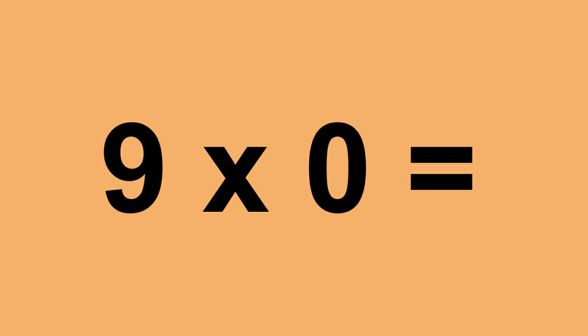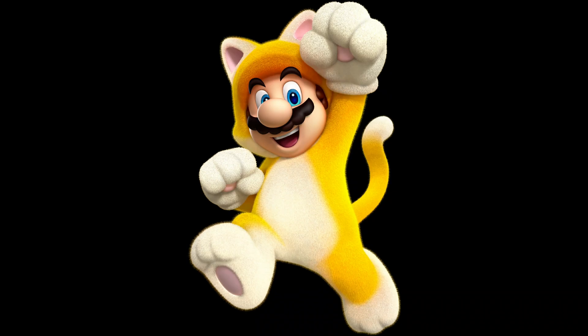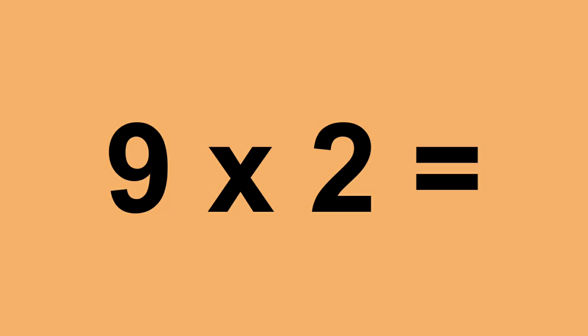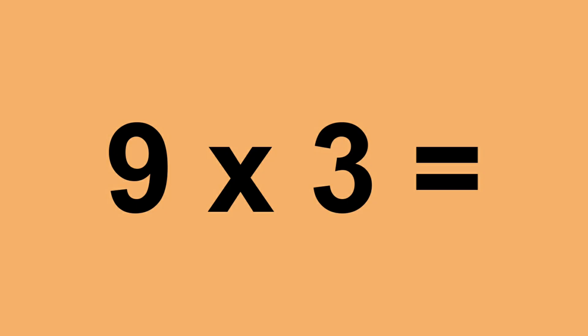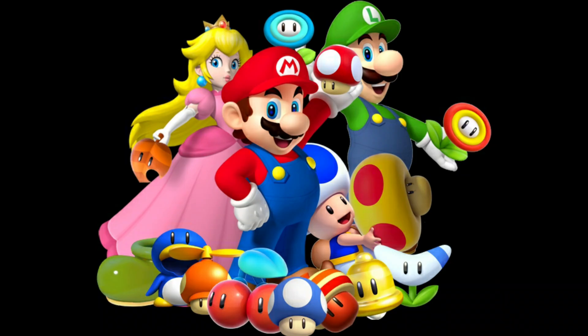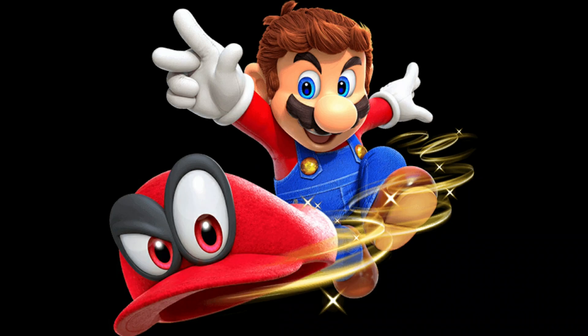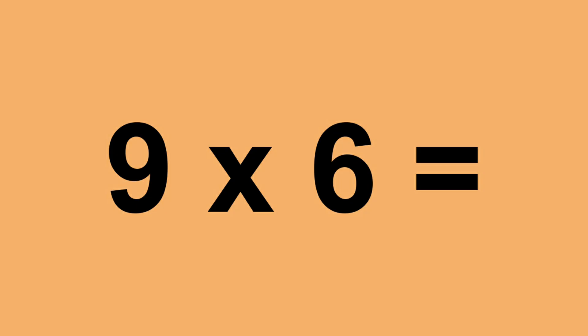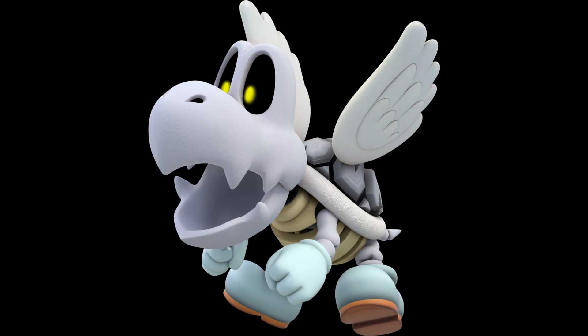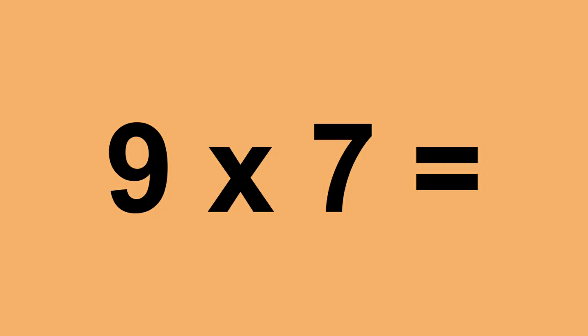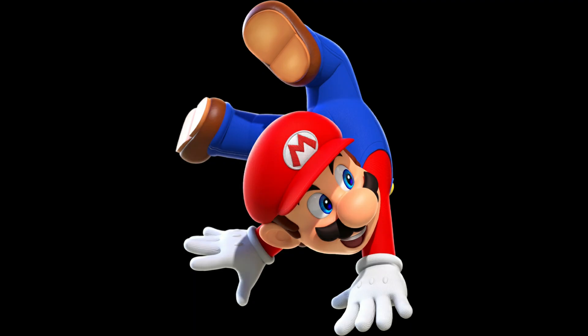9 times 0 equals 0. 9 times 1 equals 9. 9 times 2 equals 18. 9 times 3 equals 27. 9 times 4 equals 36. 9 times 5 equals 45. 9 times 6 equals 54. 9 times 7 equals 63. 9 times 8 equals 72.